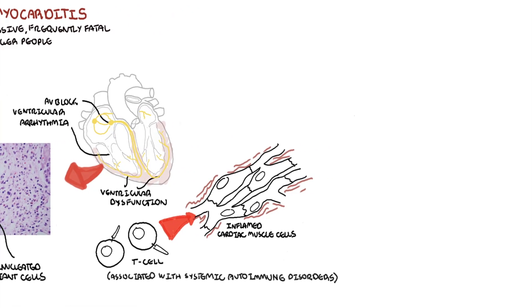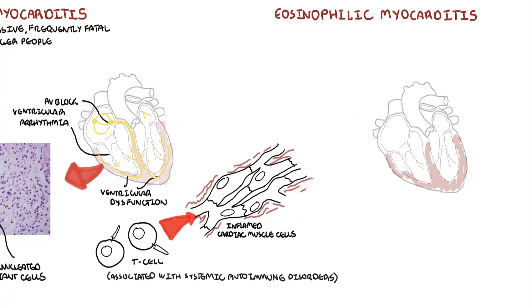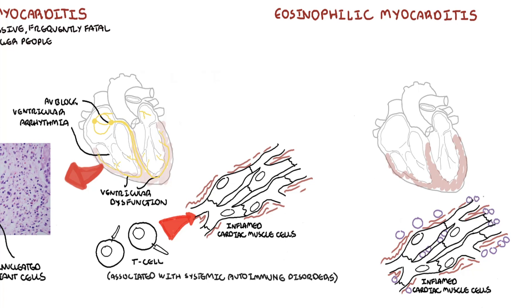There is another type of myocarditis called eosinophilic myocarditis. This is inflammation of the cardiac muscle cells characterized by eosinophilic infiltrates and may be associated with malignancy, parasitic infection, or even hypersensitivity reactions.